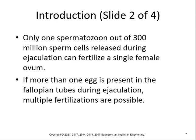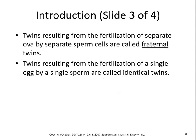Most women only release one egg every 28 days, but sometimes they release more than one. If two separate eggs are released and fertilized, those would be fraternal twins. If one egg splits into two, those would be identical twins. Twins resulting from fertilization of separate ova by separate sperm are called fraternal twins; twins from a single fertilized egg are called identical twins.